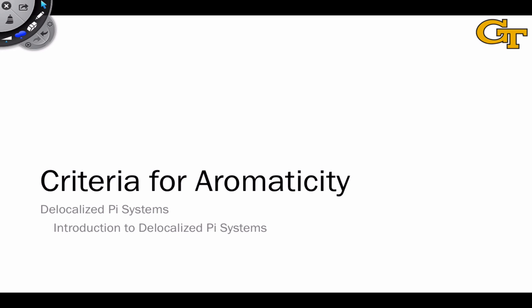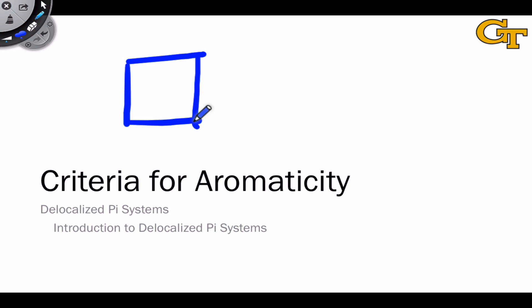What makes a molecule aromatic? As we saw in the last video, simply alternating single and double bonds doesn't always make a molecule aromatic. The molecule cyclobutadiene, which has this pattern of alternating single and double bonds, is clearly not aromatic because it's far less stable than any acyclic conjugated system.